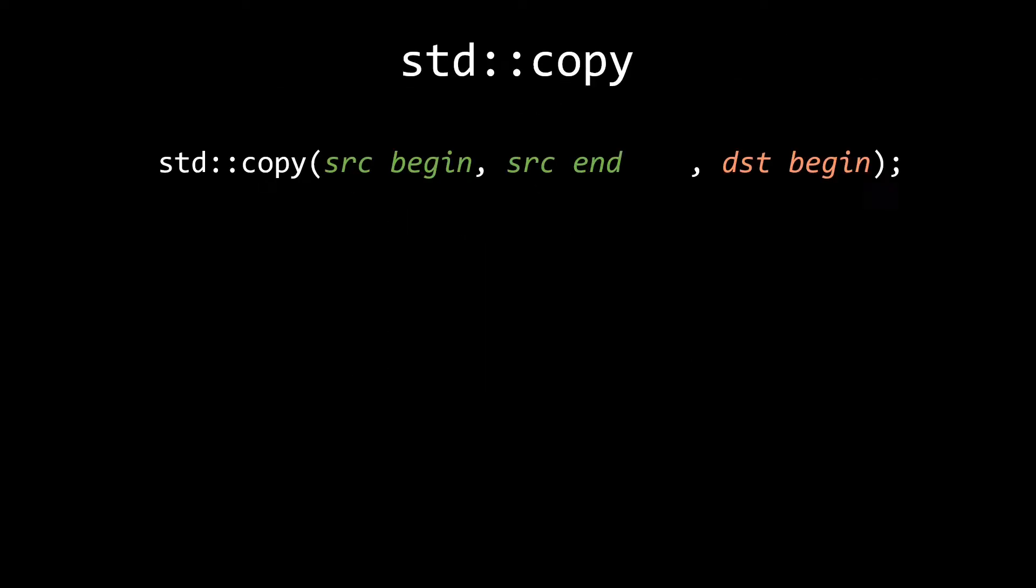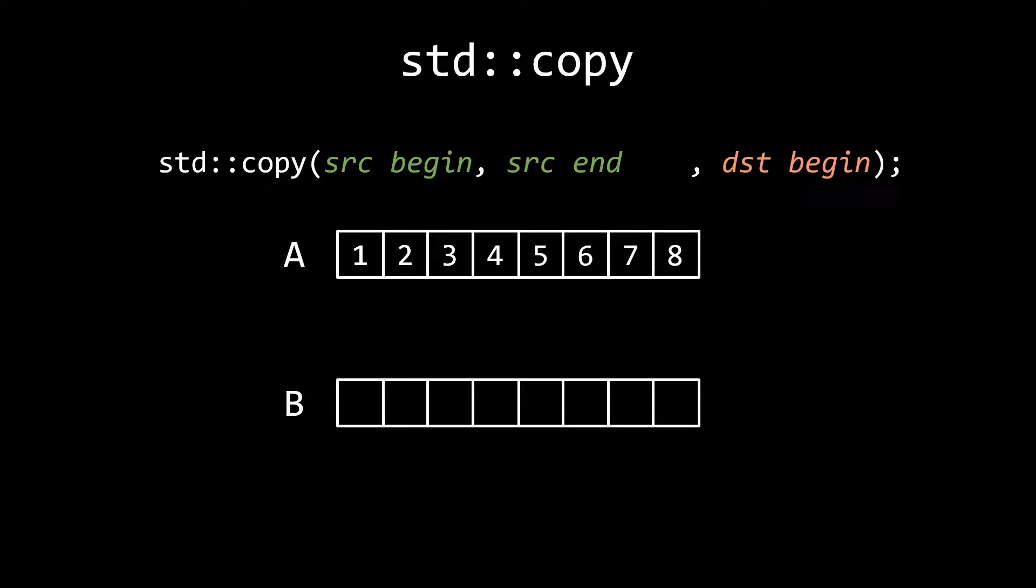As you probably already expected, the std::copy algorithm is used to copy elements from one range to another. For example, say I have this container A containing 8 elements, and this empty container B. Now I want to copy the first 3 elements from A to B.